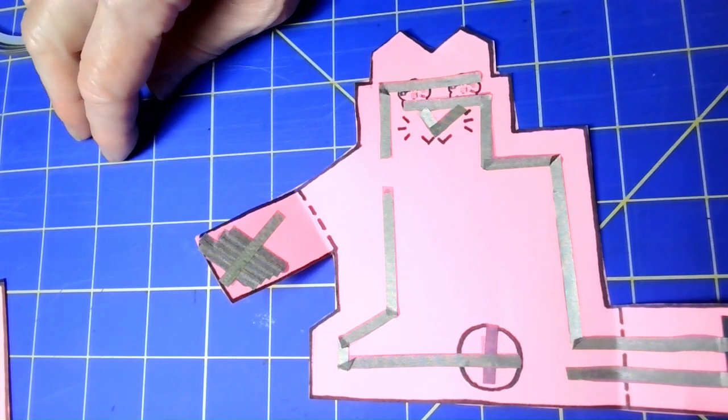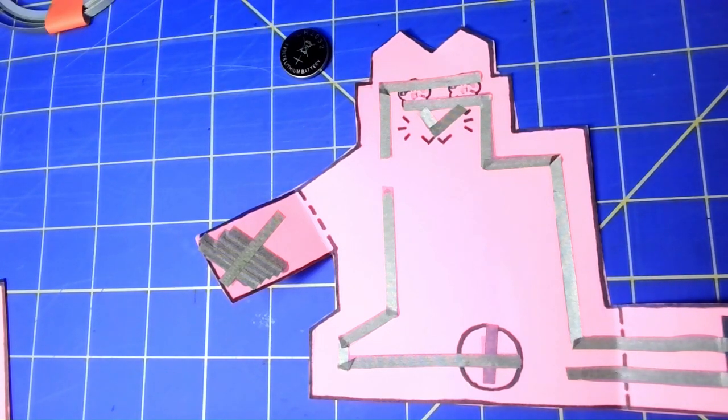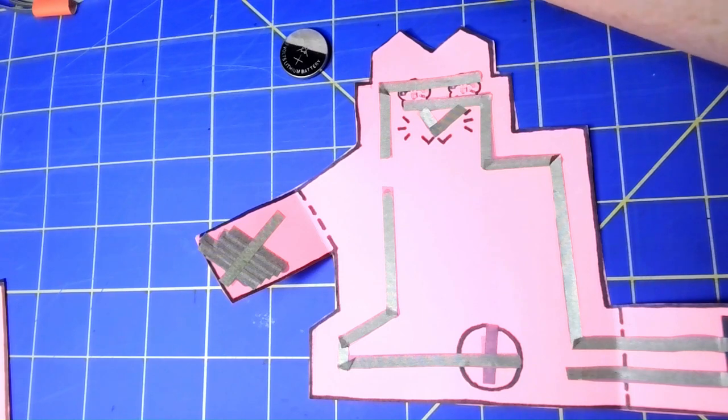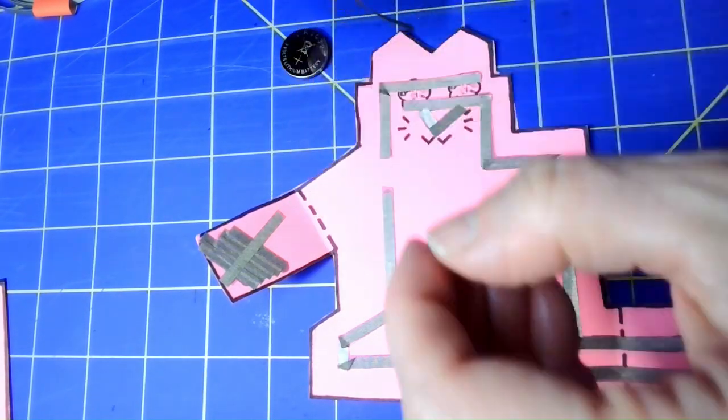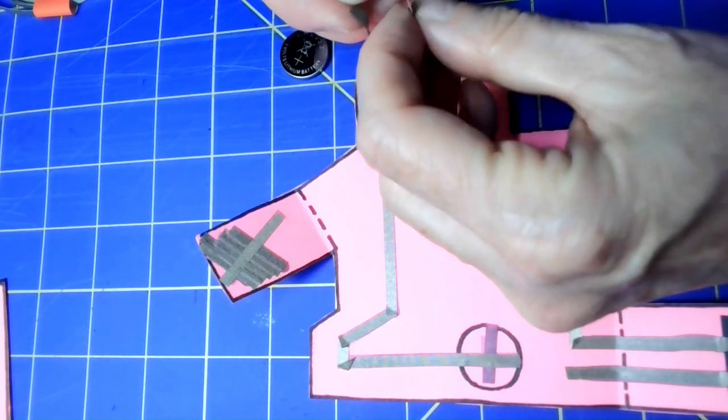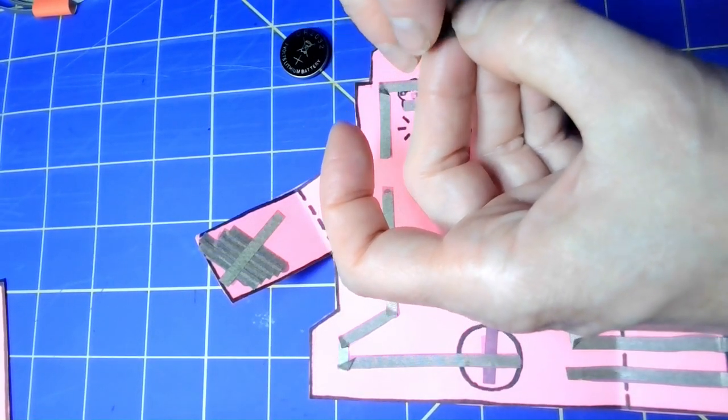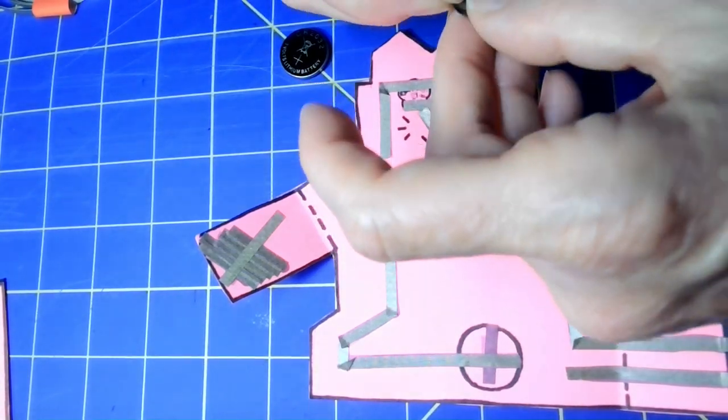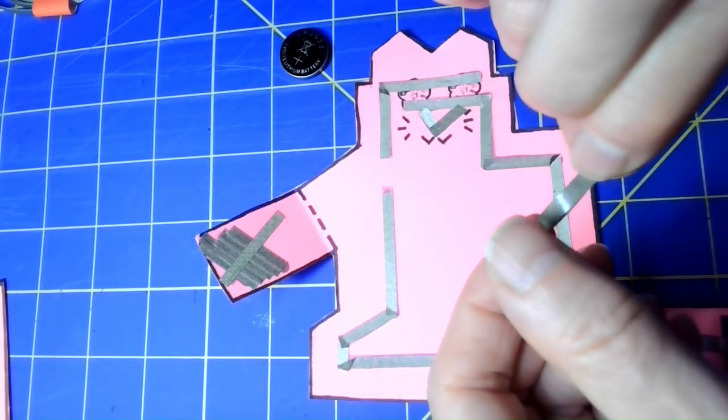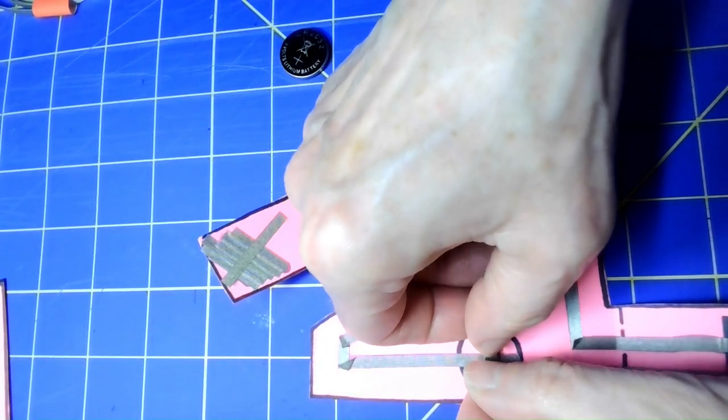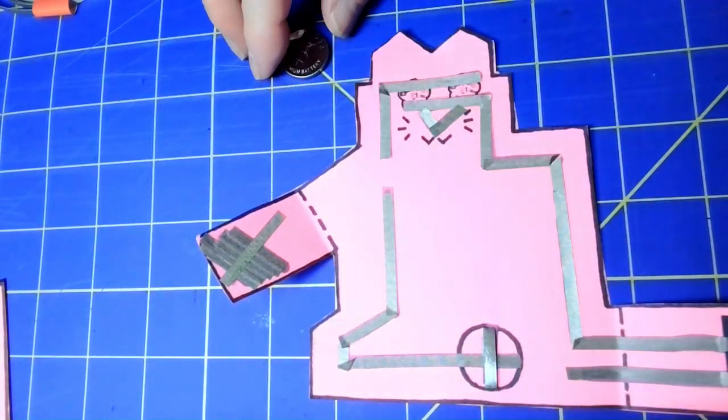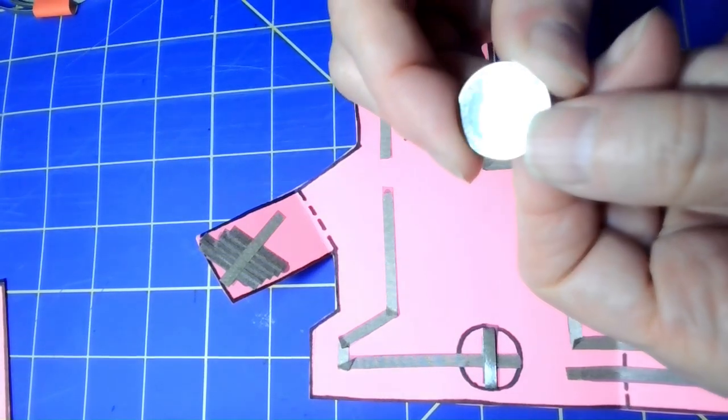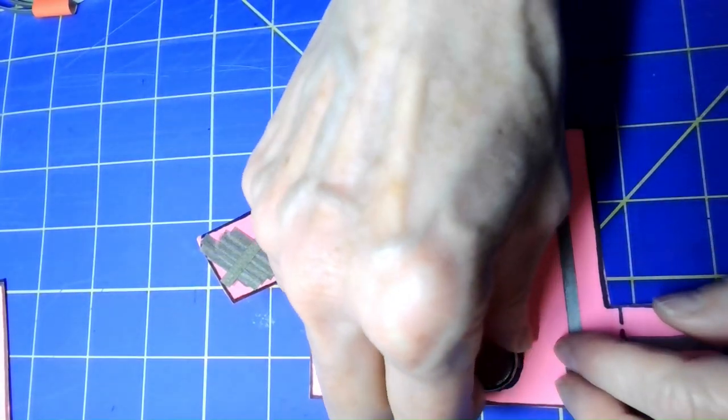The very last thing I'm going to do with the conductive tape is make a loop that will hold the battery on. I usually cut a piece about two inches long and peel it off the backing. Then I make a loop with the sticky side out, and then I take the positive side of the battery and stick that right on there.